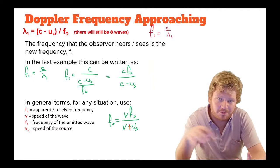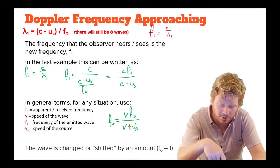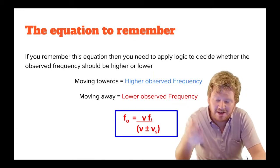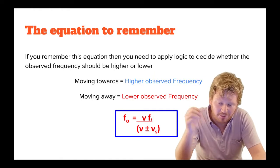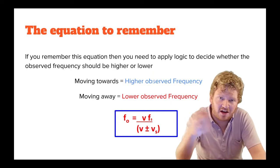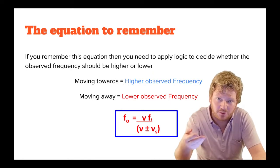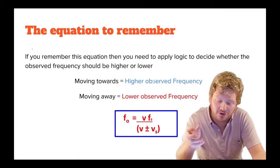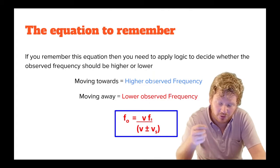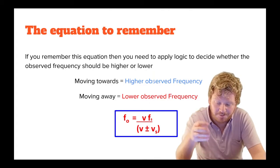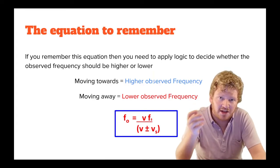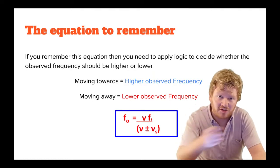So whether it's plus or minus at the bottom here depends on if we're moving towards or away. So to work out which equation to use, you've basically just got to use common sense and remember that if an object is moving towards you, you'd expect a higher frequency. If it's moving away from you, you'd expect a lower frequency. And so we end up with this final equation that you can see on the screen in front of you, which is f0 is equal to vfs divided by v plus or minus vs. And you just need to decide, when you look at the context of the problem, do I need to add these or take these away in order to get a frequency that goes up or down as I would expect it.